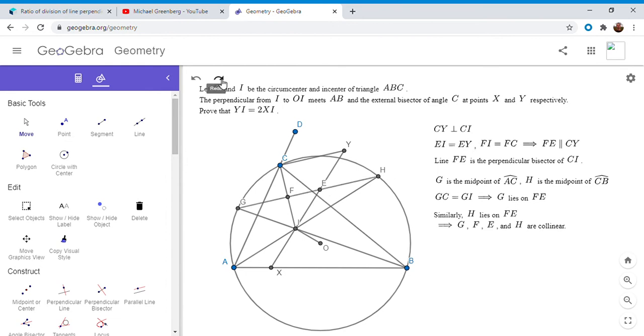So I'm going to draw on that segment. So we've shown a pretty interesting fact that all four of these points lie on the same line. Ultimately, we want to show that YI is equal to 2XI. So how do we do that?